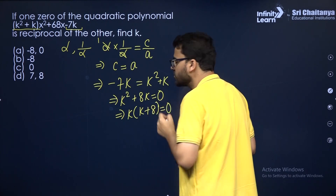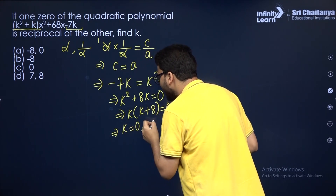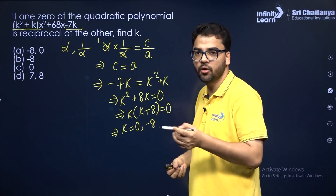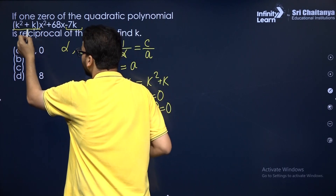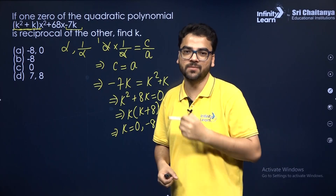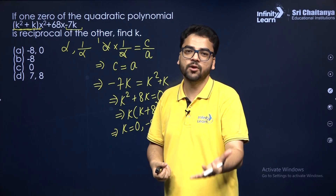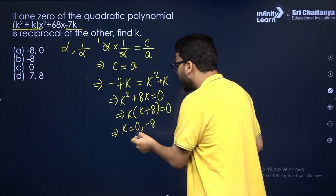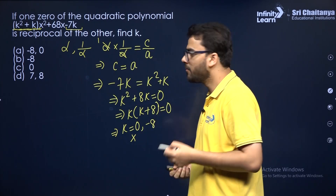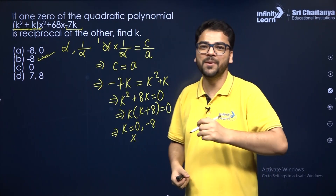Two values of k are possible: k = 0 or k = −8. However, if k = 0, the coefficient of x² becomes 0, which is not allowed — a quadratic equation cannot have its leading coefficient equal to 0. So k = 0 is rejected, and only k = −8 is the answer. I hope it is clear.